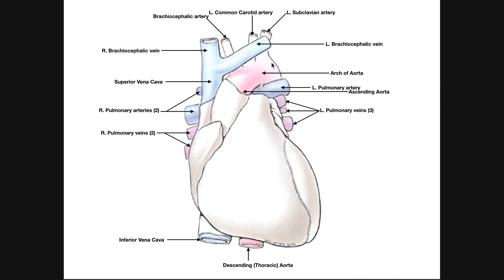The arch of aorta has three branches. In order, they are the brachiocephalic artery, the left common carotid artery, and the left subclavian artery. The brachiocephalic artery then branches into a right common carotid artery and a right subclavian artery. So coming directly off the arch we have brachiocephalic, left common carotid, and left subclavian — and then of course the descending aorta.